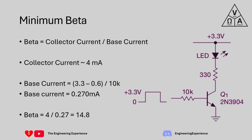Now that we've covered what's required for the question, I want to go a step further and show how we would calculate component values for a specific design example - basically the design process for choosing the resistor values and selecting our transistor and LED.